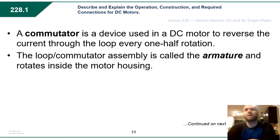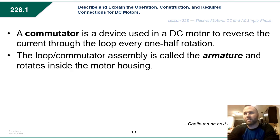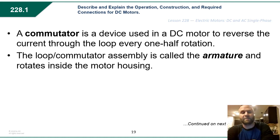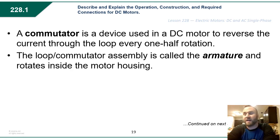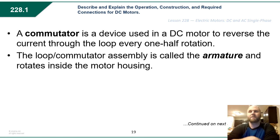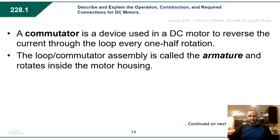If we were not to change the direction of electron flow every time it looped, the loop would come to a standstill at those two points between two and four because current is only flowing in one direction. So a device known as a commutator is used in a DC motor to reverse the current through the loop every one half rotation. The loop's commutator assembly is called an armature, and that is what rotates inside the motor housing.